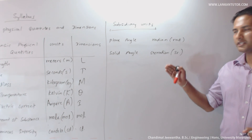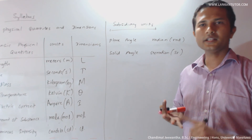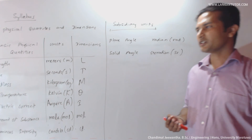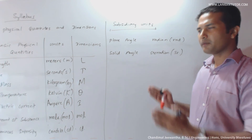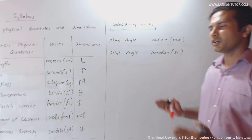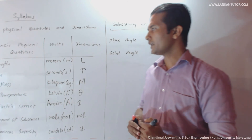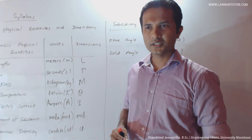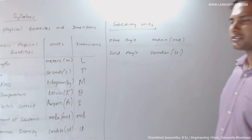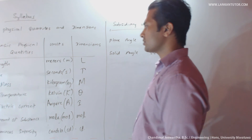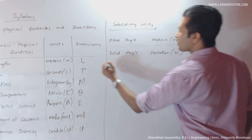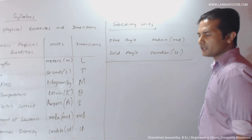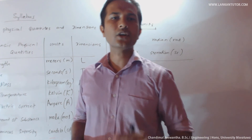Considering these physical quantities — plane angle and solid angle — there are no such dimensions. So while all seven basic physical quantities have seven different dimensions, when considering plane angle and solid angle, there is no such dimension. Let's move on to the next subtopic, which is called derived physical quantities.